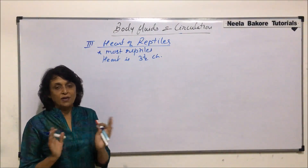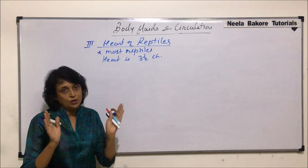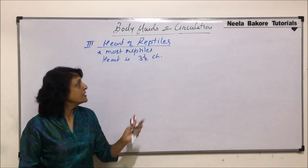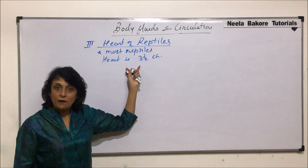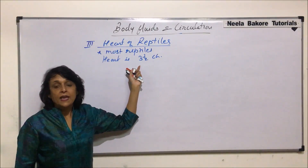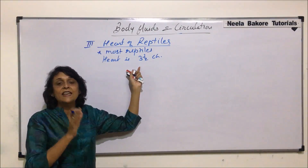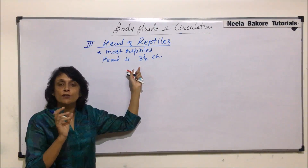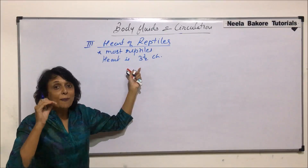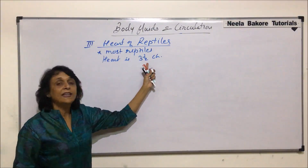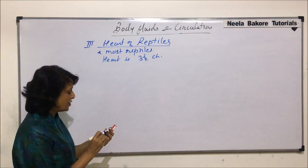The auricles are completely divided, so there is a left auricle and right auricle — two compartments. The third compartment is the ventricle. There is no complete separation, but there is an interventricular septum which is formed partially. And that is why it is written as three-and-a-half-chambered.